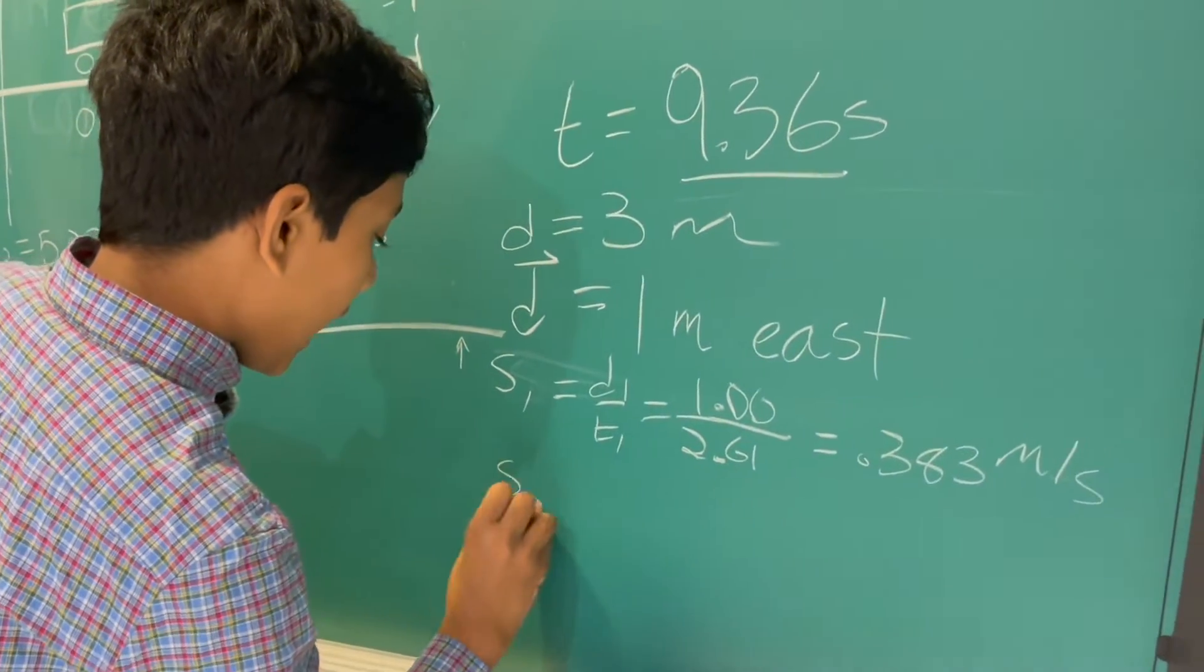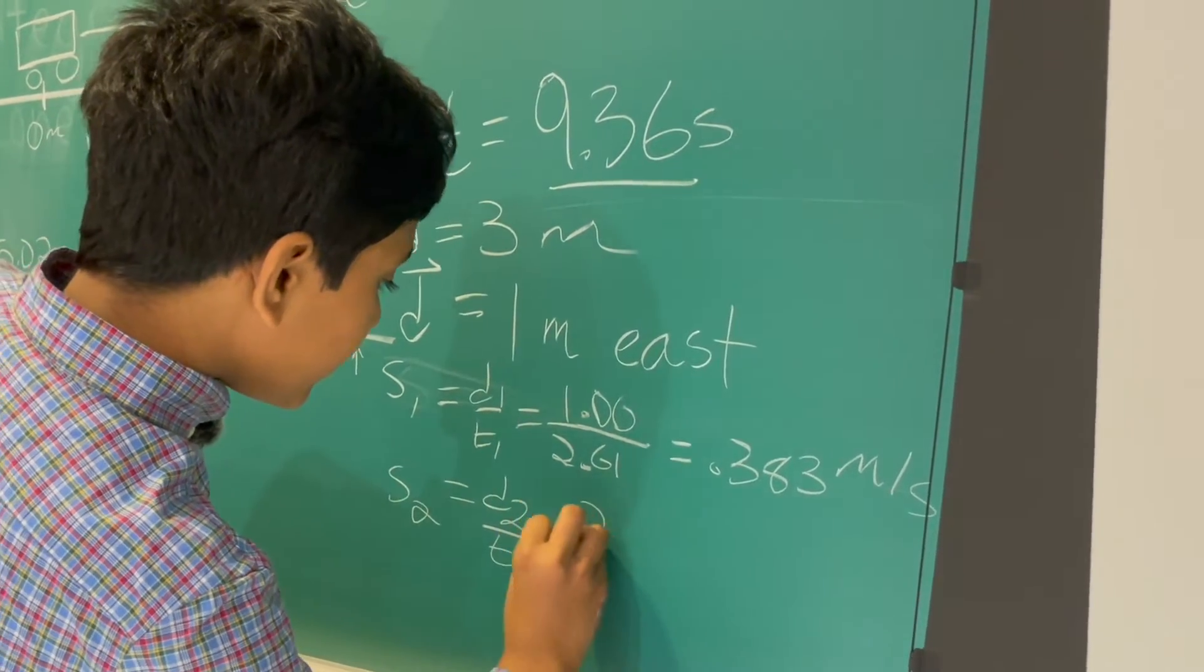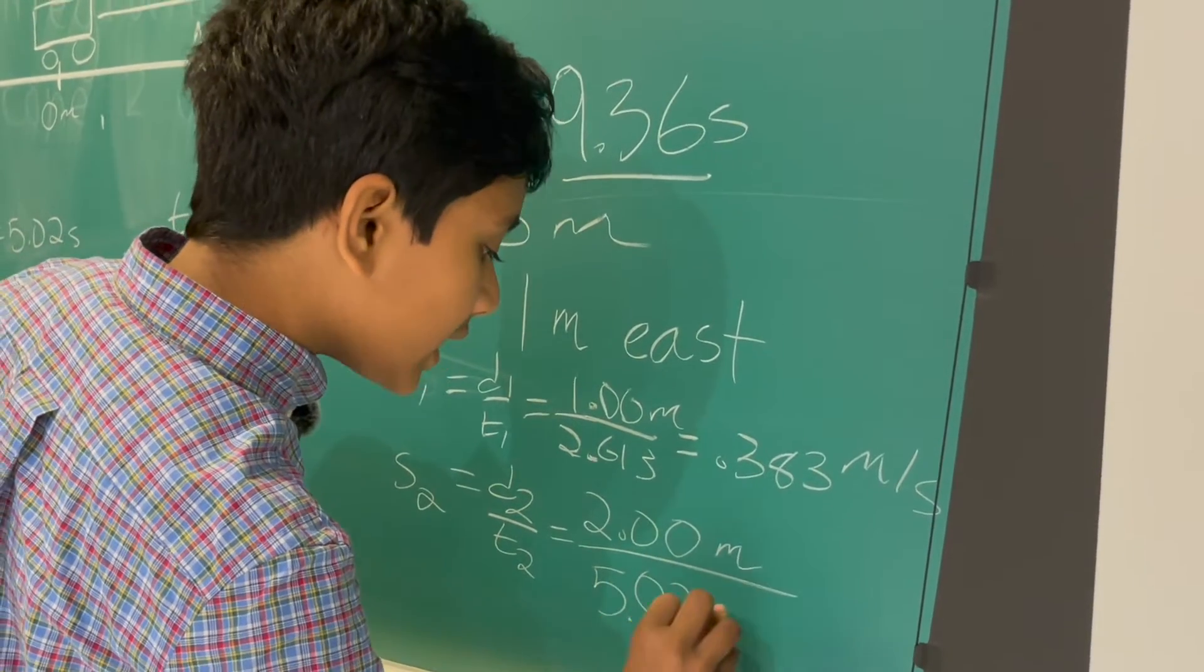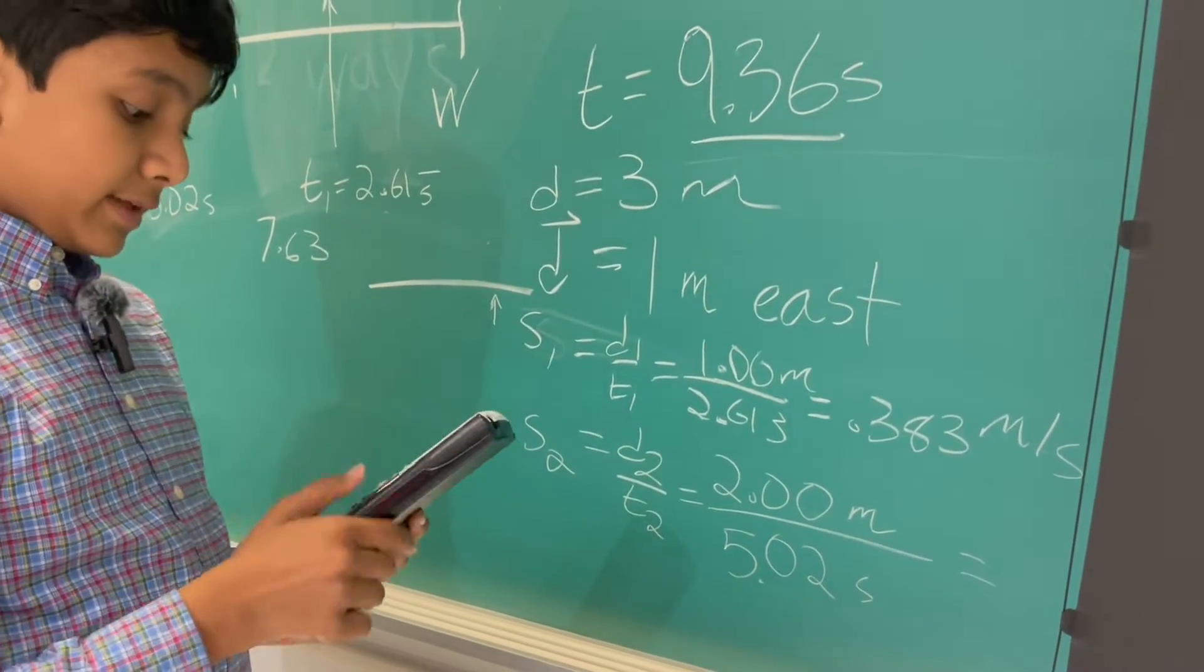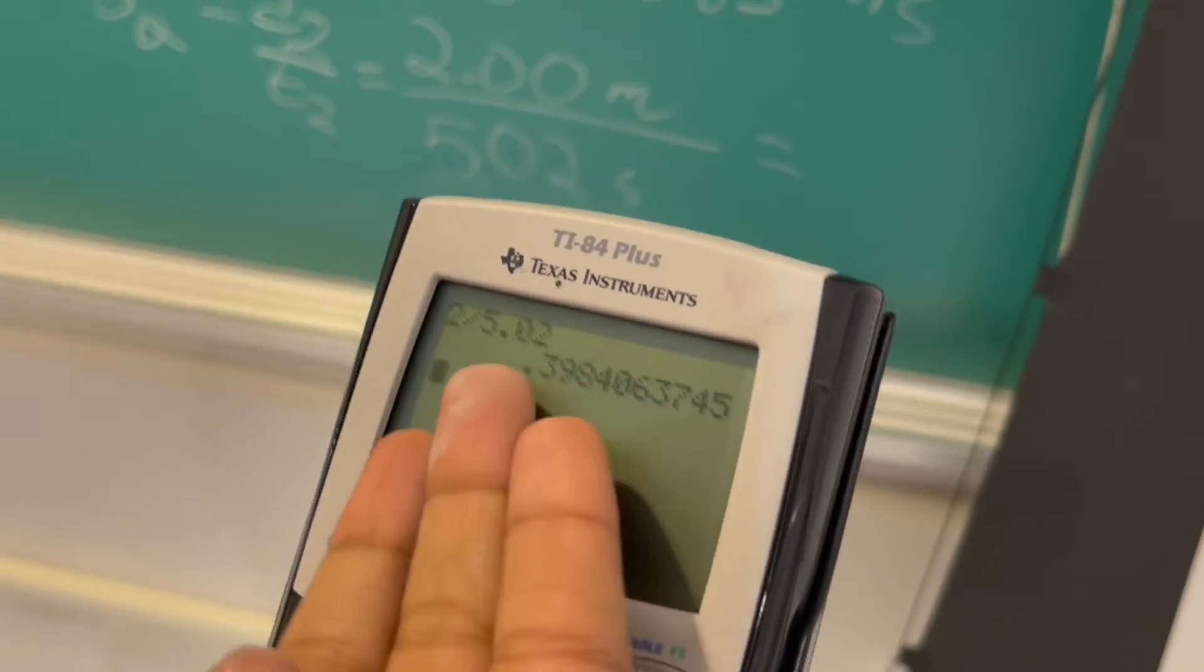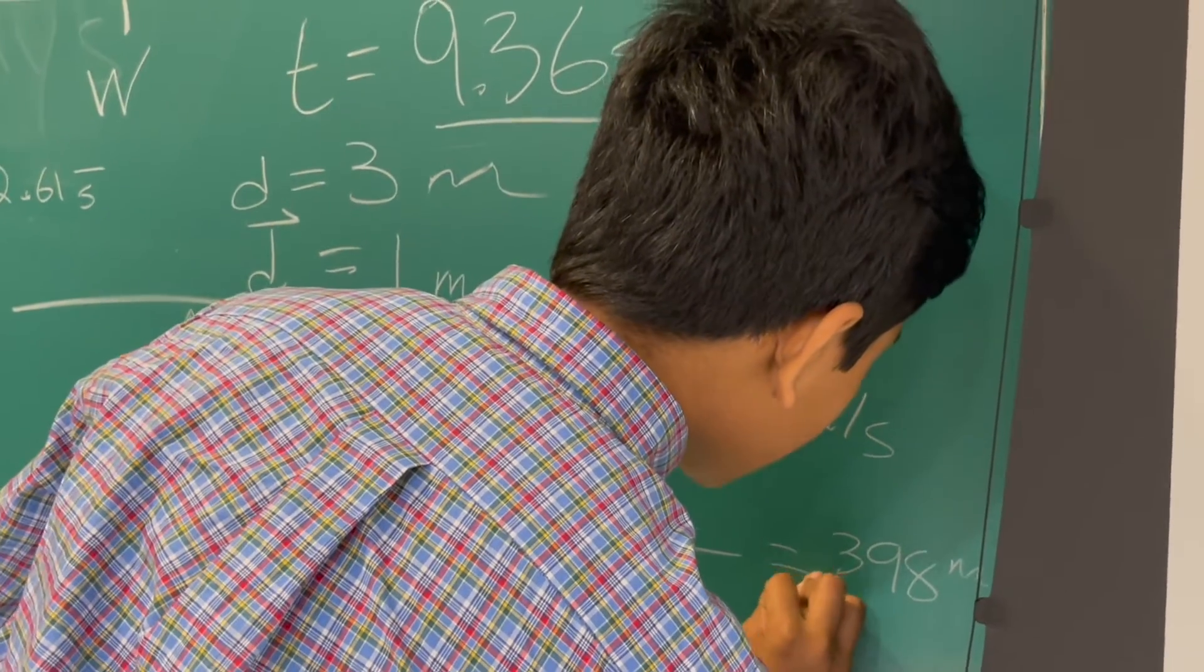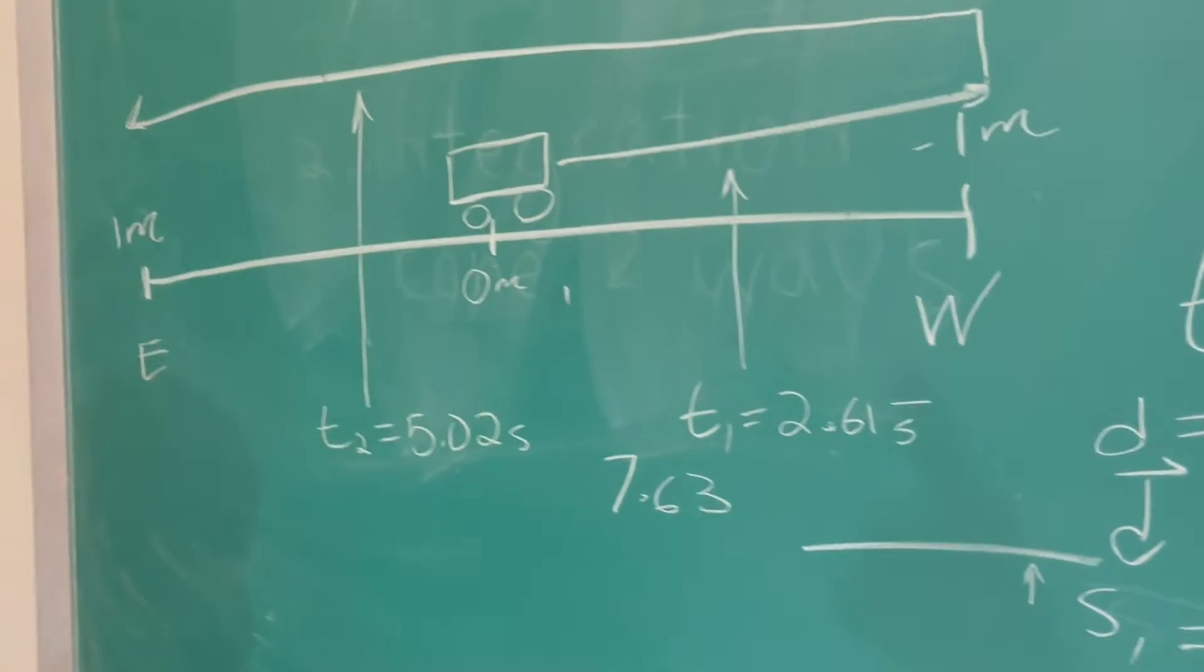And for S2, we take D2 over T2. It's 2.00 meters. I should remind you to put units. That's always a good practice. Over 5.02 seconds. And some uncertainty went into this, meaning these two are not necessarily the same. But they're very close, as you can see. So once I divide this in, we're only using three sig figs here. So we just write down 0.398 meters per second. Which is pretty stunning, the difference of only 0.015.